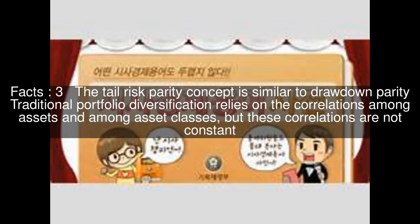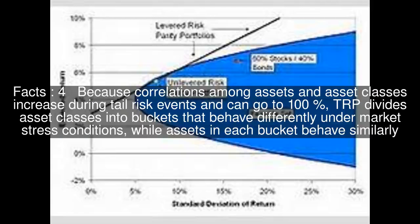The tail risk parity concept is similar to drawdown parity. Traditional portfolio diversification relies on the correlations among assets and among asset classes, but these correlations are not constant. Correlations among assets and asset classes increase during tail risk events and can go to 100%.